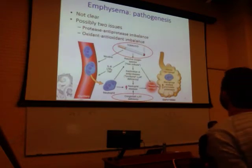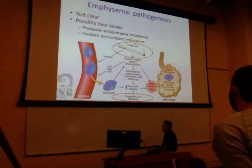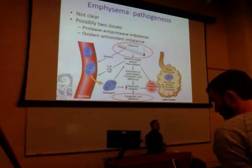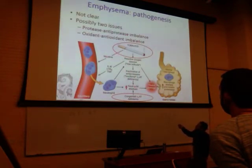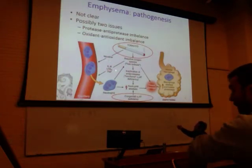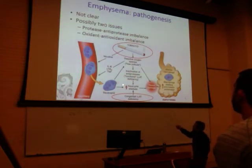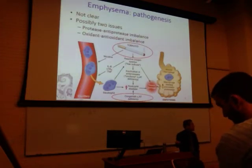If you have a patient with an alpha-1 antitrypsinase deficiency who also uses chronic cigarette smoke, they're probably going to develop emphysema relatively early in life. What accelerates this is that tobacco smoke contains very high levels of free radicals and reactive oxygen species, which recruit neutrophils to the area.